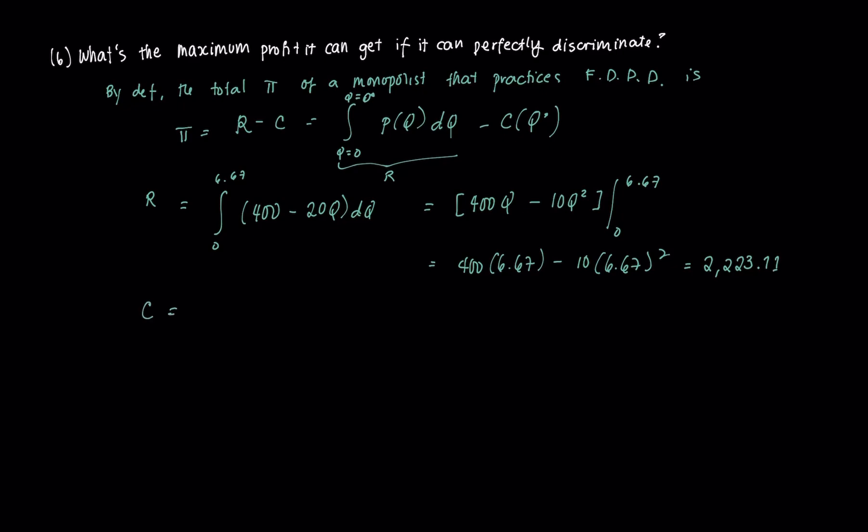Then your cost part is 20Q squared plus 500. This was your cost function. Just plug in Q. So you get 20 times 6.67 squared plus 500, and you get 1,389.78. Then to get the profit, that's just revenue minus cost. That's equal to 2,223.11 minus 1,389.78, and you're going to be left with 833.33.